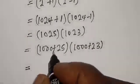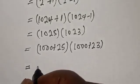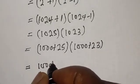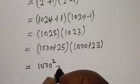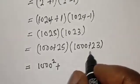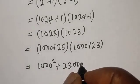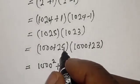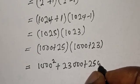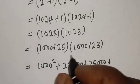This equals 1000 times 1000, which is 1,000,000, plus 1,000 times 23, which is 23,000, plus 25 times 1,000, which is 25,000, plus